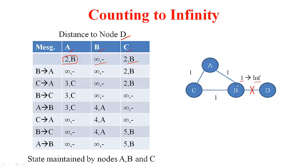As soon as B detects that this link is broken, it updates its state and says it is at a cost of infinity — it does not have any next hop to reach D. So this link breakage triggers a triggered update. B tells A that it is at a cost of infinity to D, and thereby A also changes its cost to infinity because it was going via B. Now suppose even before B sent its triggered update to C, C happened to contact A with a periodic update saying it can reach D at a cost of 2. So A updates: since C says it can reach D at cost 2 and A is at distance 1 to C, it updates its cost to 3 and changes the next hop to C.